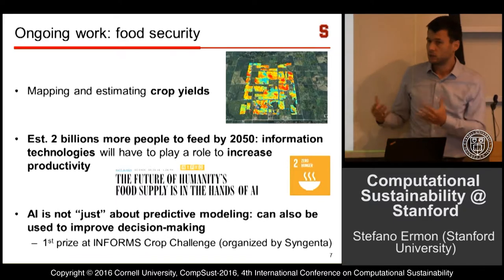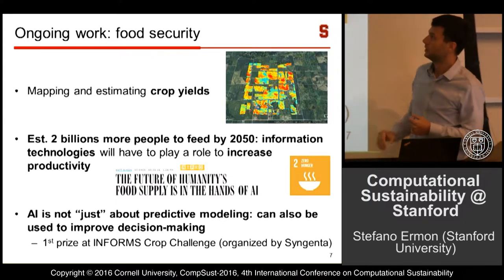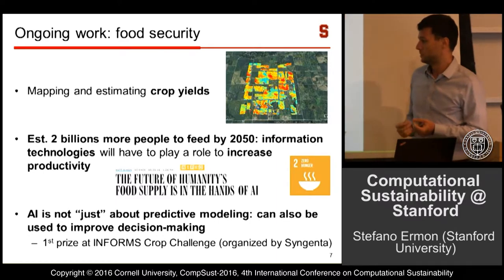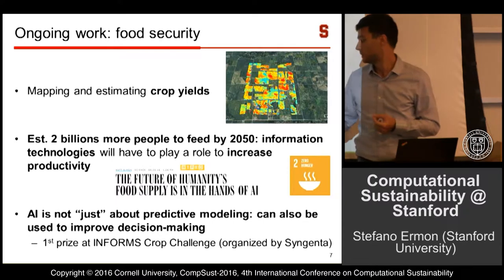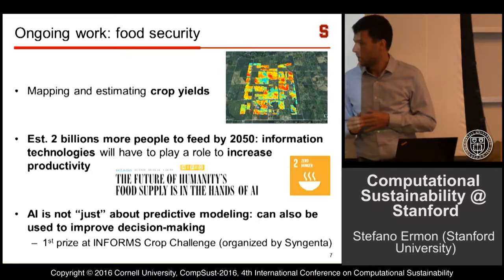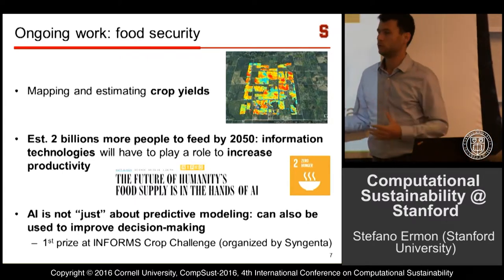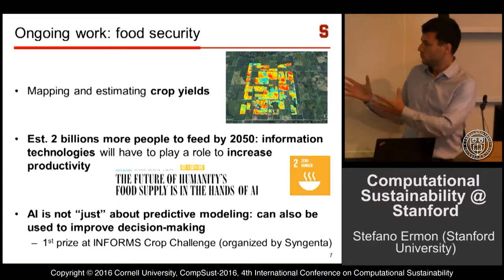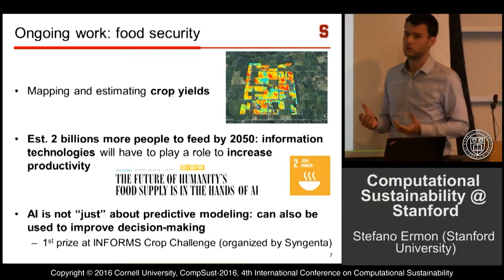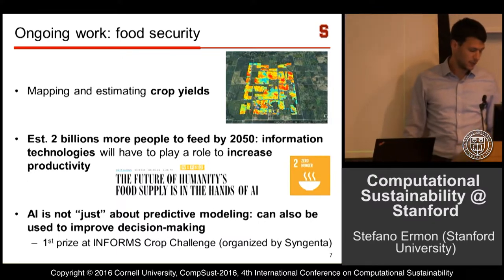One way AI can help is through stochastic optimization to improve food productivity. We used crop yield models to improve agricultural productivity and participated in a crop challenge at INFORMS organized by Syngenta — a big multinational agrochemical corporation. They have hundreds of different seed varieties and asked which should be used for a given location to maximize food productivity. Using AI techniques and stochastic optimization, we came up with solutions that performed much better than their previous techniques, and we won first prize.